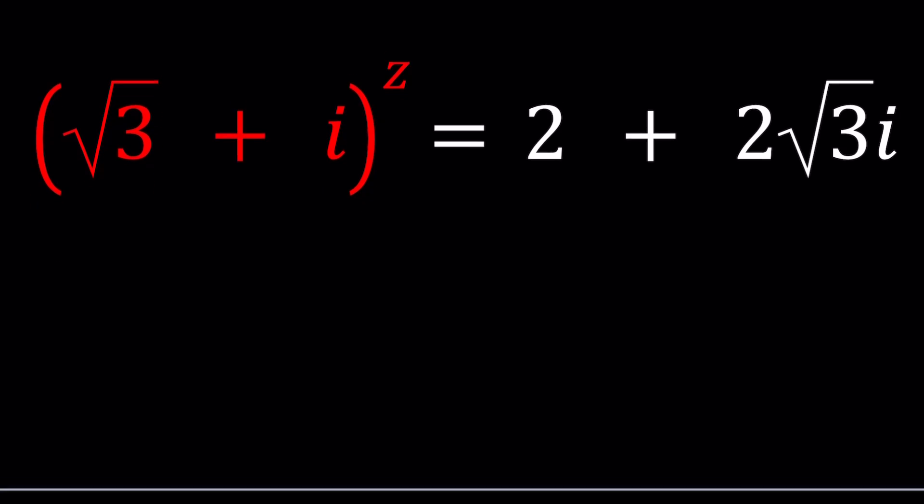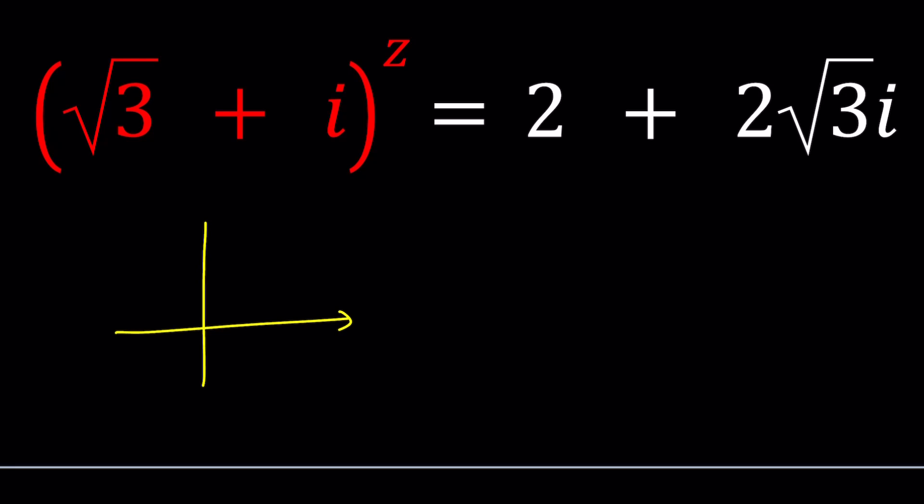We're going to be using argand plane to represent complex numbers as points or vectors. Root 3 plus i is going to have a modulus of 2 and it's going to make an angle of theta, which is pi over 6 radians. That will be considered 30 degrees. And the same thing goes for the other number, but its angle is going to be different. And its modulus or magnitude is going to be 4, that's 4 units. And it'll make pi over 3 radians. But no matter what you get, you can write these numbers in polar form.